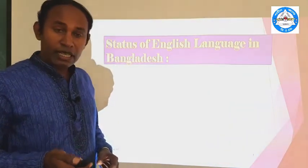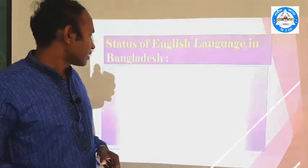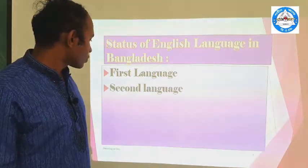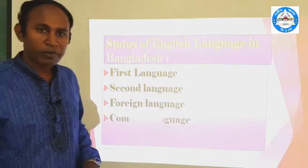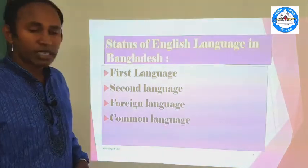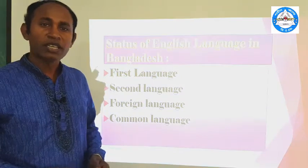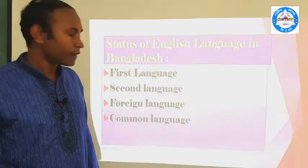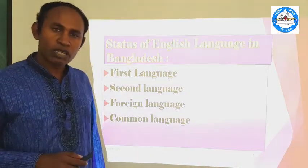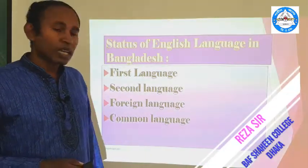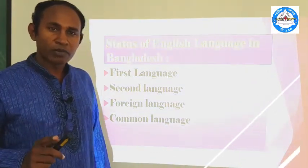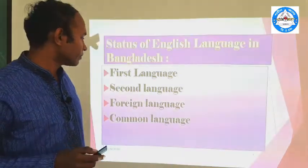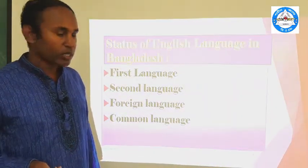So what are the statuses of a language in any country? A language may be the first language, maybe the second language, maybe the foreign language, or maybe the common language — that is, lingua franca — of any country. Besides that, there is a global language, an international language. So many statuses are there. We will discuss these four statuses of English language and select one answer. Let's go gradually, one by one.